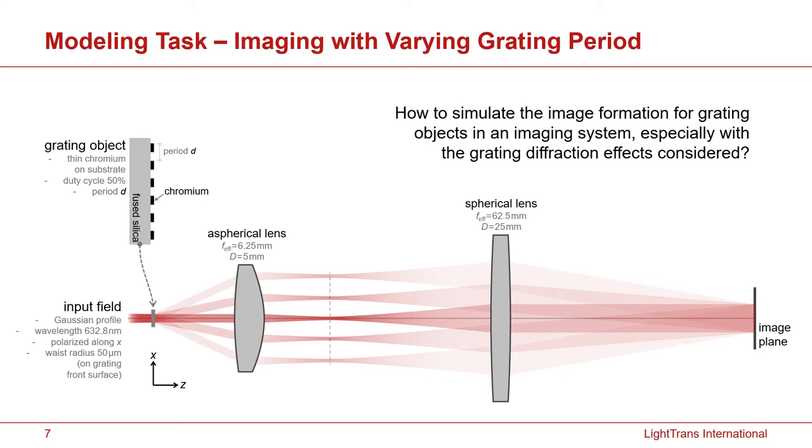So in this sketch, you can see the principle of how images are generated following Abbe theory. A grating object will diffract the light into different orders. These orders are going to be collected by the image system and make, finally, an interference of them with a magnified angle. Therefore, the final interference pattern will look as a magnified image of the object.